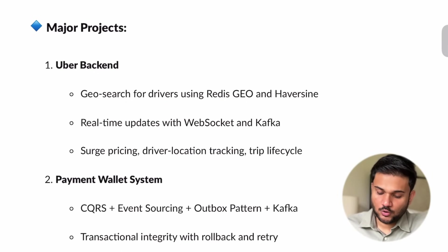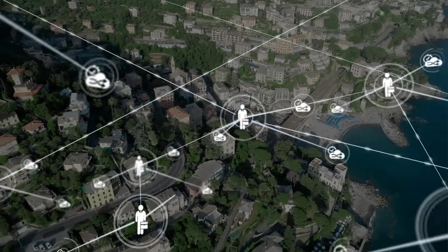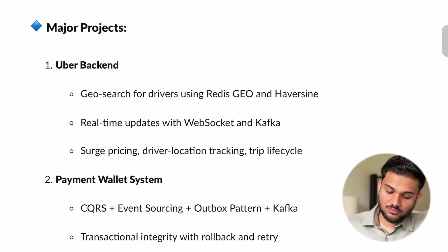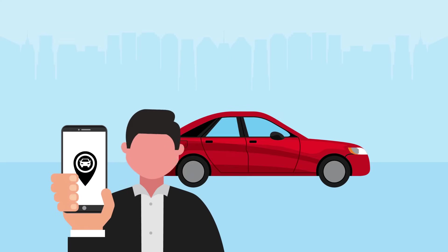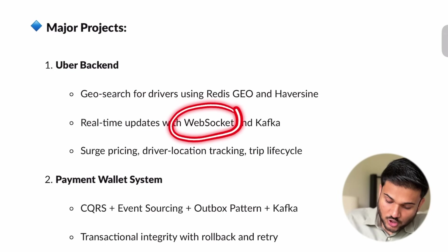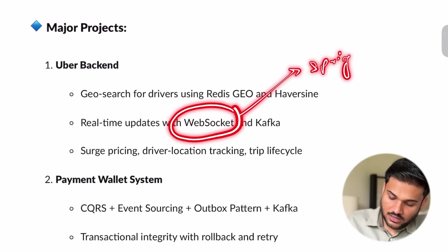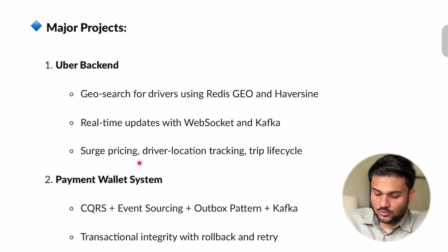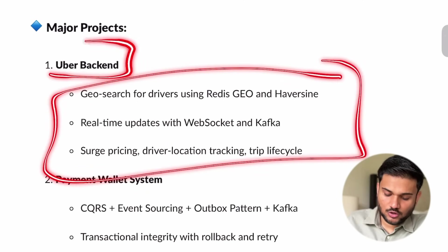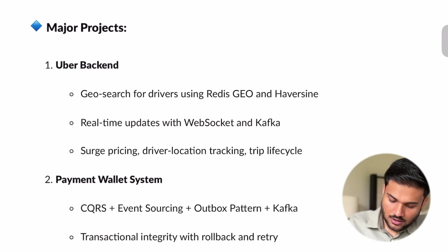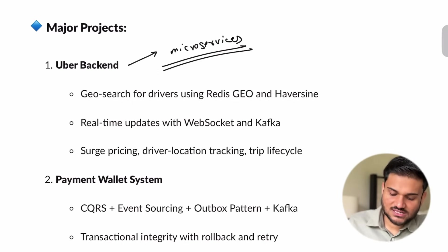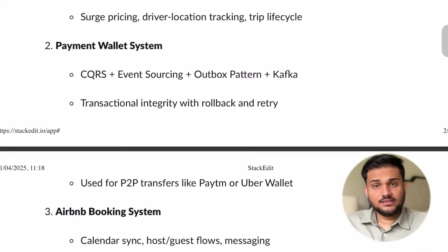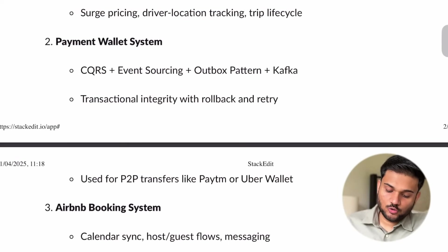In this Uber backend project, what we are technically going to do is cover how exactly the concepts of geohashing come into place, and how exactly you will be able to communicate with different clients using WebSockets. So we are going to see how WebSockets are implemented with Spring Boot. Not a lot of people actually explore how WebSockets work with Spring Boot. We are going to see how exactly driver location tracking and everything can work. All of this implementation we are going to see in the Uber backend, and this is going to be a dedicated microservice-driven project with different microservices to facilitate various aspects of Uber.